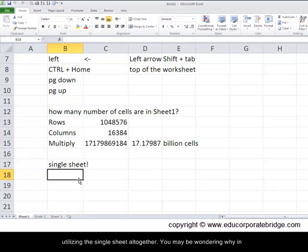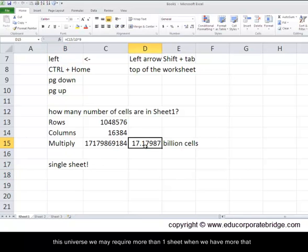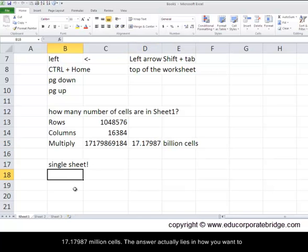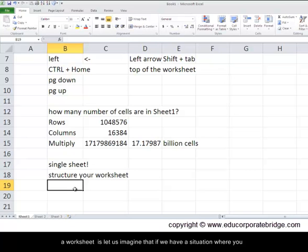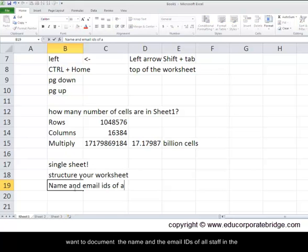You may be wondering why in the universe we may require more than one sheet when we have more than 17.17987 billion cells. The answer actually lies in how you want to structure your workbook or worksheet. What do I mean by structuring your worksheet is let us imagine that if we have a situation where you want to document the name and email ids of all staff in the company.